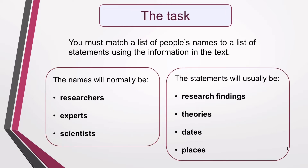We'll start by looking at what you have to do for name matching questions. Generally, the task is to match a list of people's names to a list of statements, using the information in the text to make the correct matches. The names will normally be of researchers, experts or scientists, and the statements will usually be research findings, theories, dates or places.